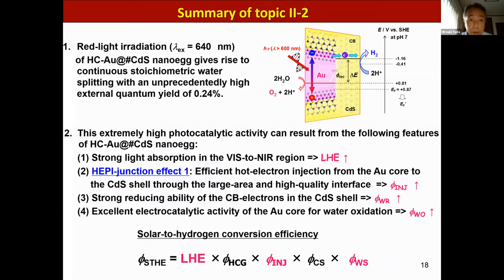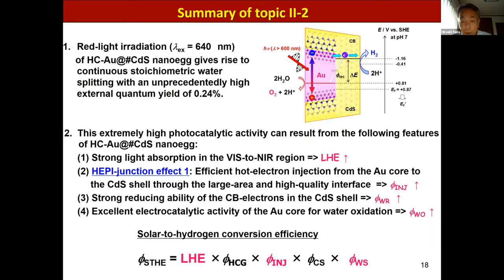Let me summarize topic 2. Red light irradiation of half-cut Au core CdS shell nanoegg enables continuous stoichiometric water splitting with an unprecedentedly high external quantum yield of 0.24%. This extremely high photocatalytic activity results from: strong light absorption in the visible to near-infrared region; efficient hot electron injection from the gold core to the CdS shell through the large area and high-quality interface; strong reducing ability of conduction band electrons in the CdS shell; and excellent electrocatalytic activity of the gold core for water oxidation.